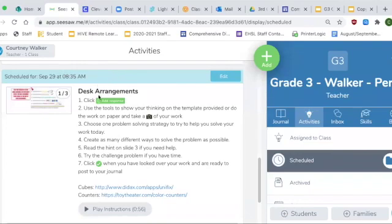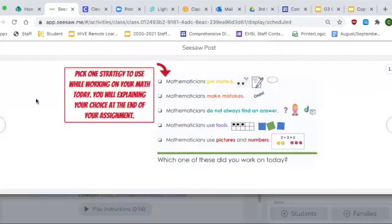We're doing an assignment called desk arrangements. To start off our problem today, you need to choose one of these problem-solving strategies to solve the problem. At the end of your assignment, you are going to write in a complete sentence what problem-solving strategy you used to help solve this problem. Know that ahead of time you're only choosing one, but you need to write about it at the end of the work today.